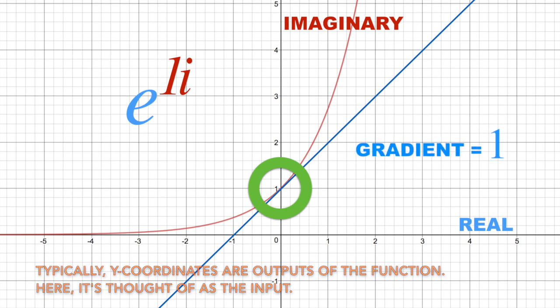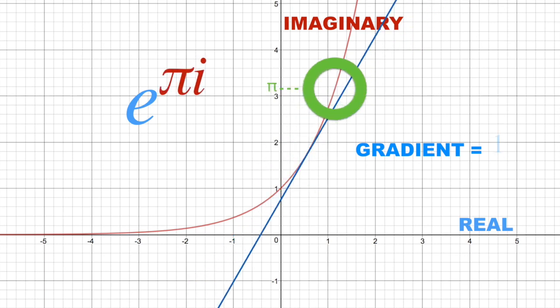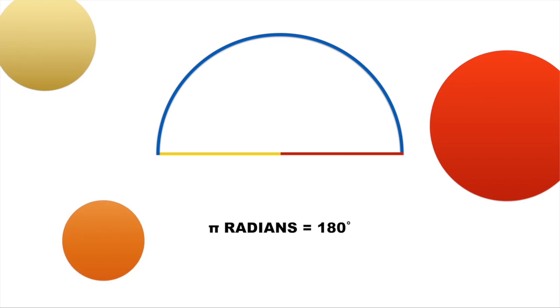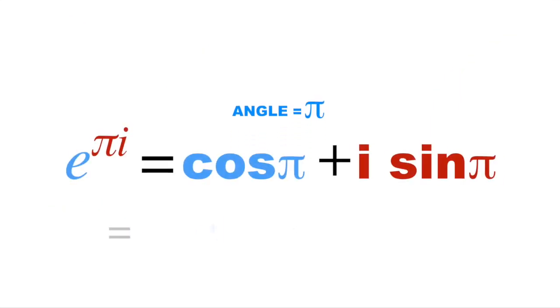Remember that for e, the y-coordinates are equal to the gradients, hence e to the i or e to the one i has a gradient of one and an angle of one radian, while e to the pi i has a gradient of pi and an angle of pi radians, or 180 degrees, making e to the pi i cos pi plus i sine pi, which is negative 1!